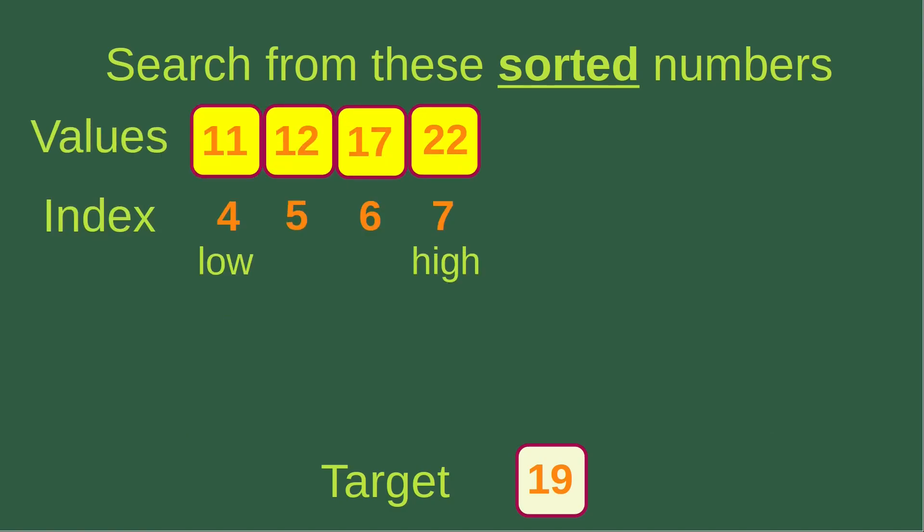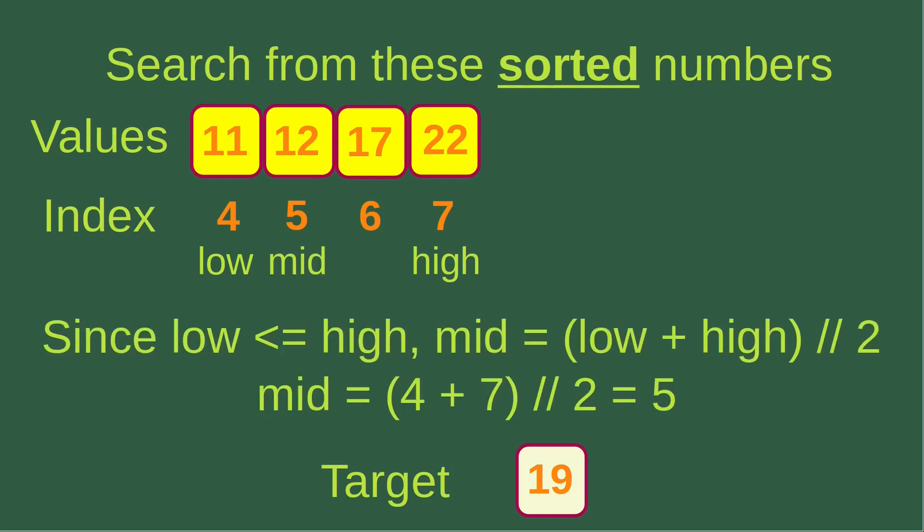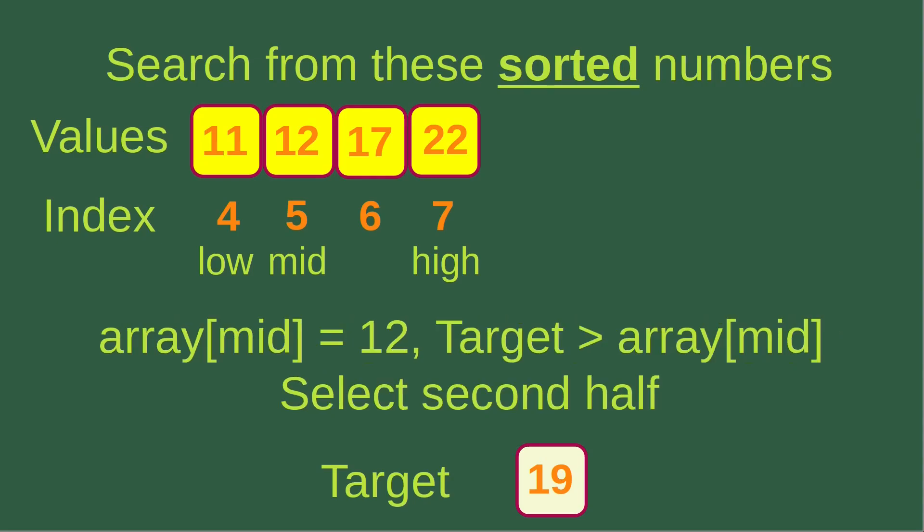Now we focus on the binary search on these four numbers. We find the high index and the low index: the low index is 4 and the high index is 7. Since the low index is smaller than or equal to the high index, we can find out the mid-index using the formula, and we find that the mid-index is 5, which corresponds to the value 12. The element at the mid-index is 12, which is smaller than our target, so we have to choose the second half of the array to continue the binary search.